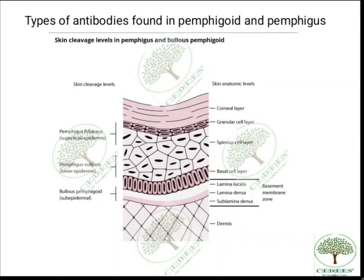Hello, good evening students. I'll be discussing a few doubts in oral pathology. The first question is about the types of antibodies found in pemphigoid and pemphigus. There was a little confusion regarding that, so to understand it, we need to review the nature of these two skin conditions — pemphigus vulgaris in particular, and pemphigoid.